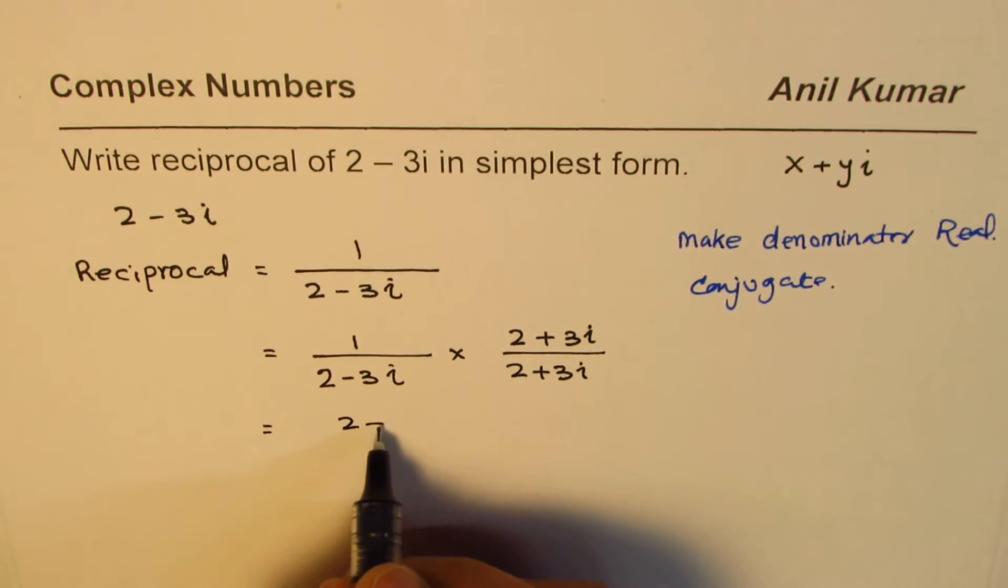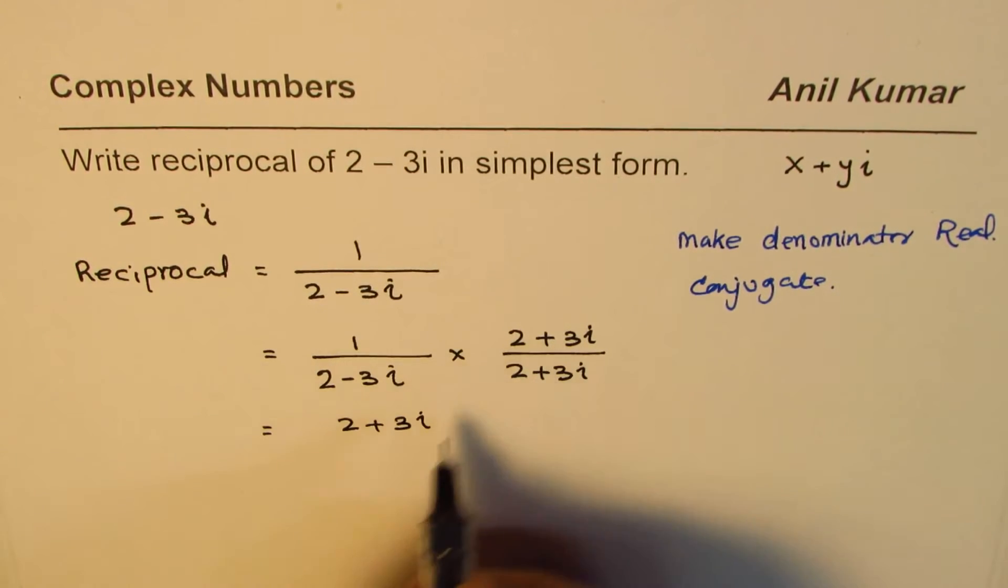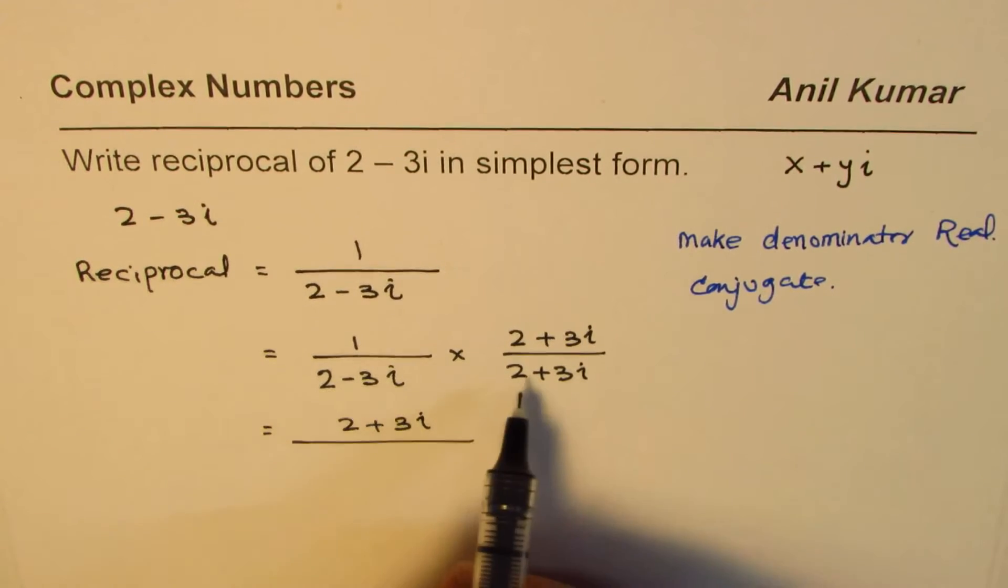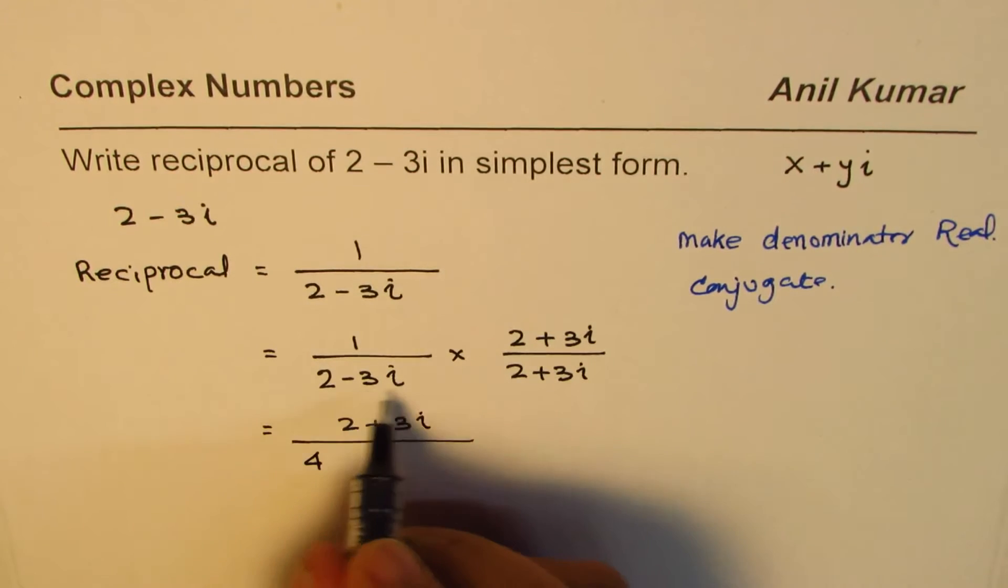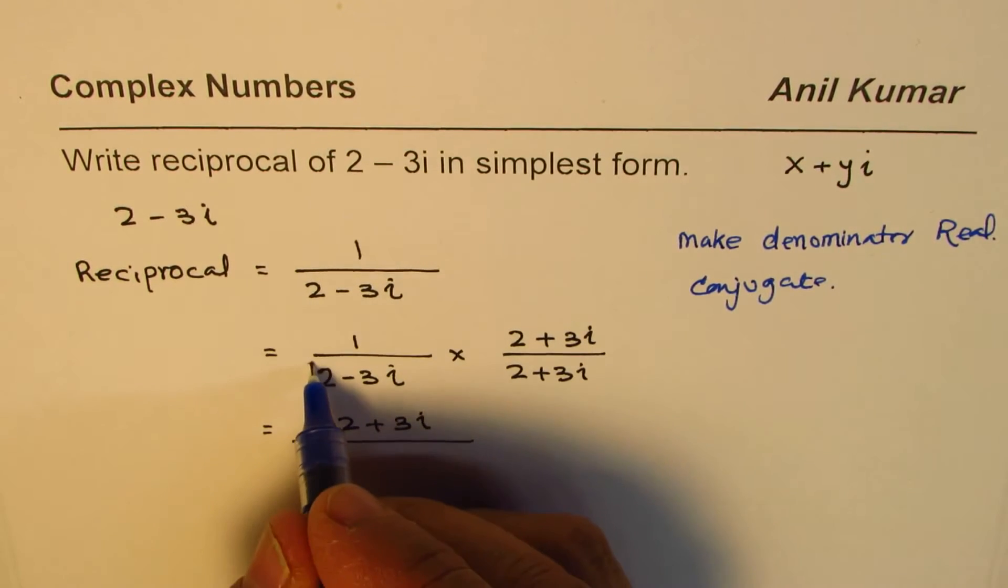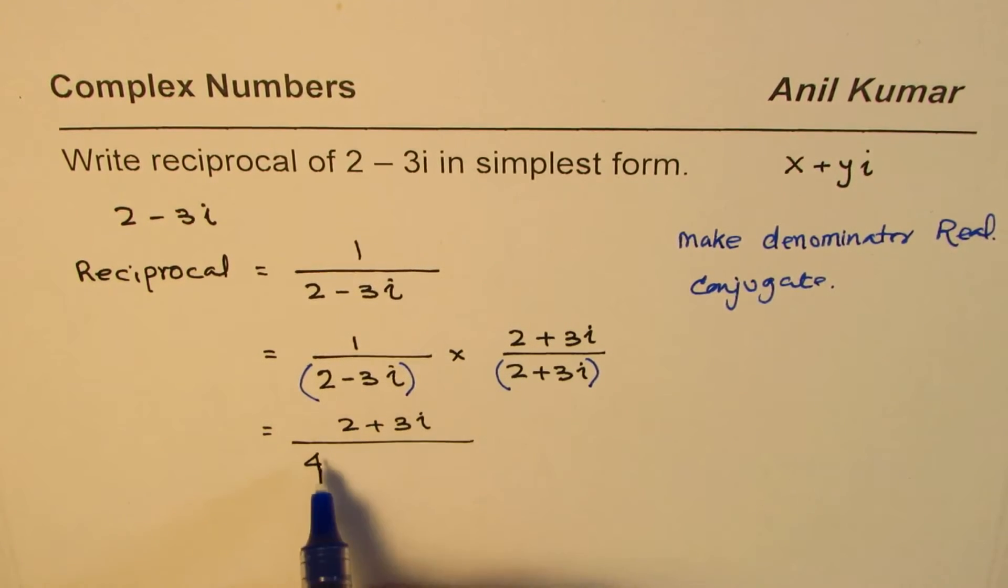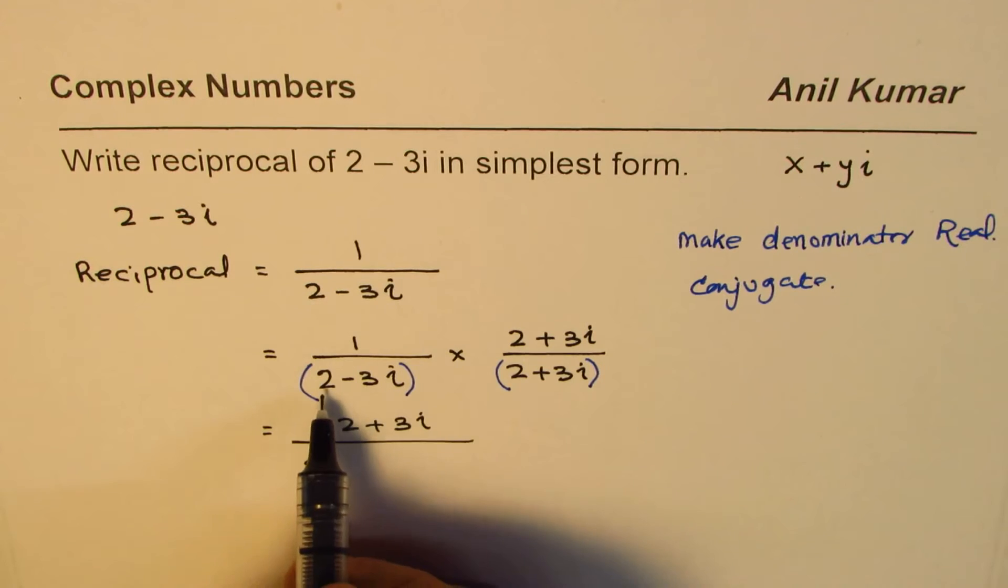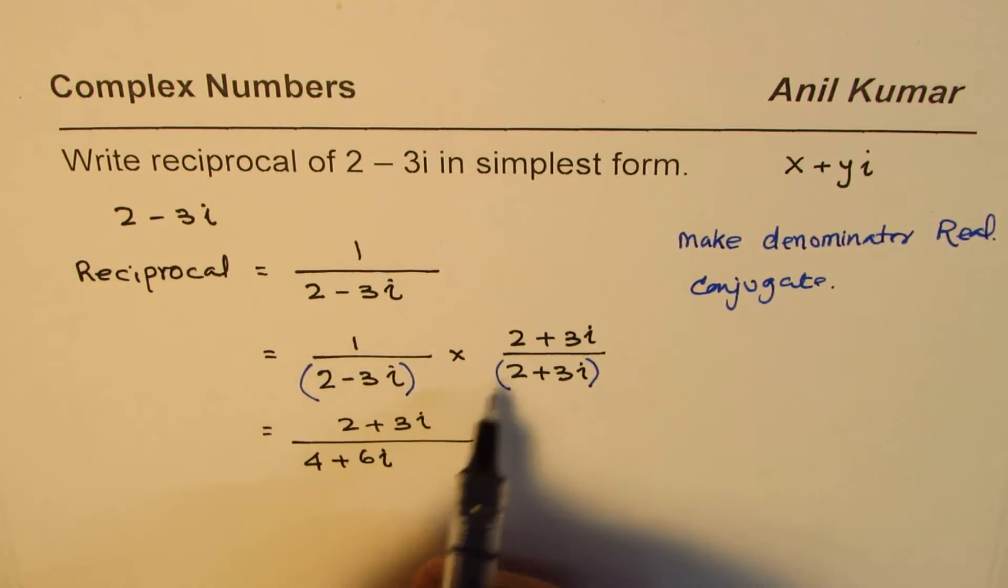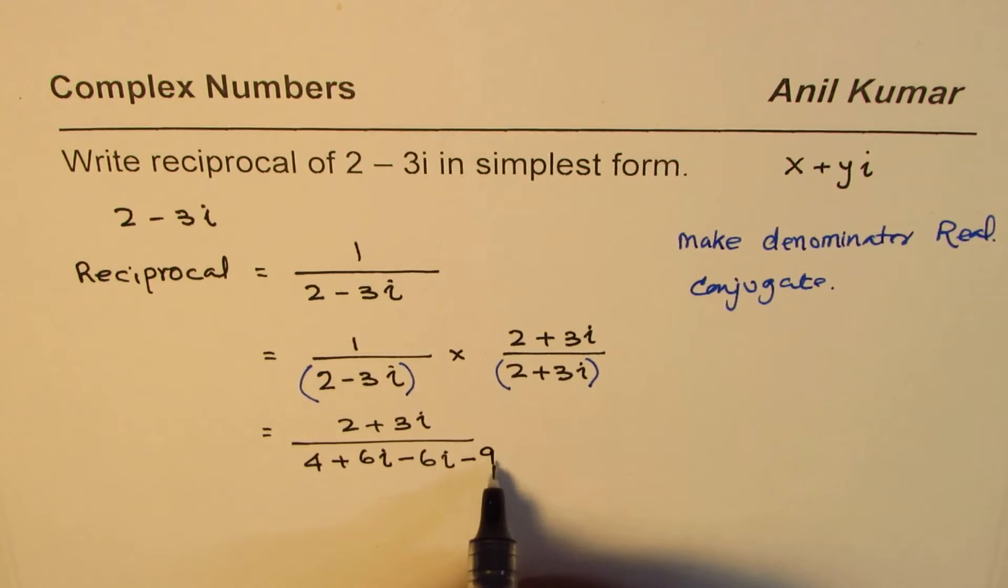Numerator will be 2 plus 3i. 1 times any number is the same number. In the denominator, we have to multiply 2 by 2, we get 4. We are doing the distributive property, multiplying these two binomials. 2 by 2 gives us 4. 2 times 3i gives us plus 6i, minus 3i times 2 is minus 6i, and minus 3i times plus 3i gives us minus 9i squared.